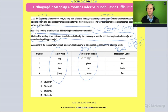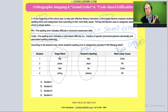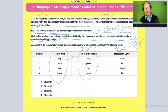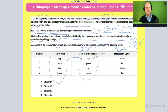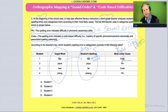So first let's just identify the errors ourselves. The student was supposed to spell the word 'flap,' and they wrote 'flap' — but incorrectly. What's the error? Well, it's a sound order thing, right? We have a sound order issue. They moved the sounds into the wrong order. There's something with the sounds. It's not a code thing — it's a sound order thing. Do you see that?